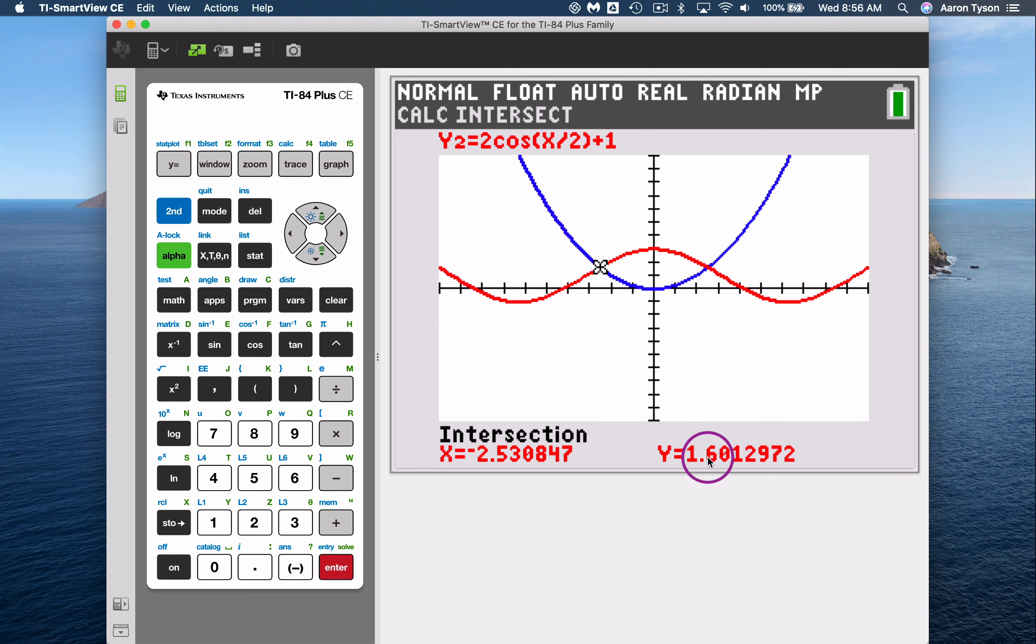And you would see, I get my second point of intersection. It looks pretty much the same as this other one because of the symmetry of both of these functions, but the x-coordinate is just negative.